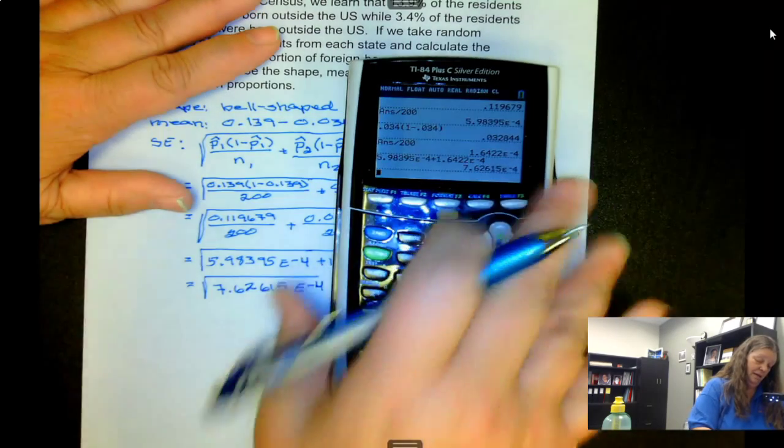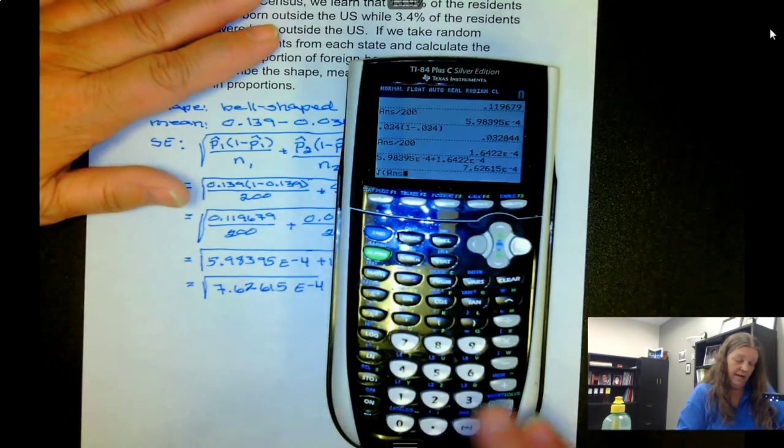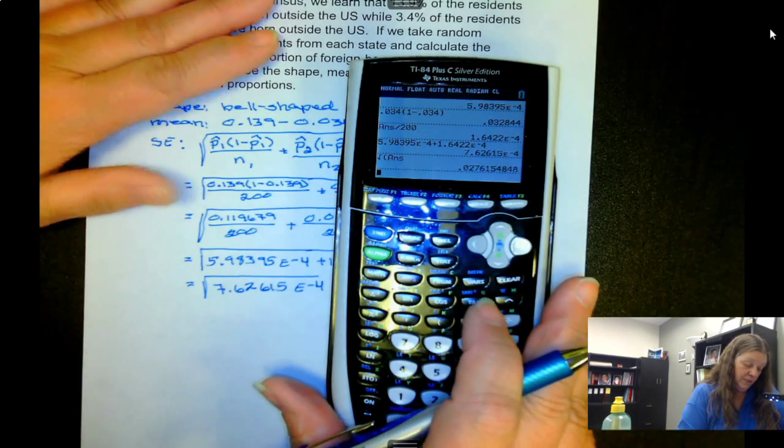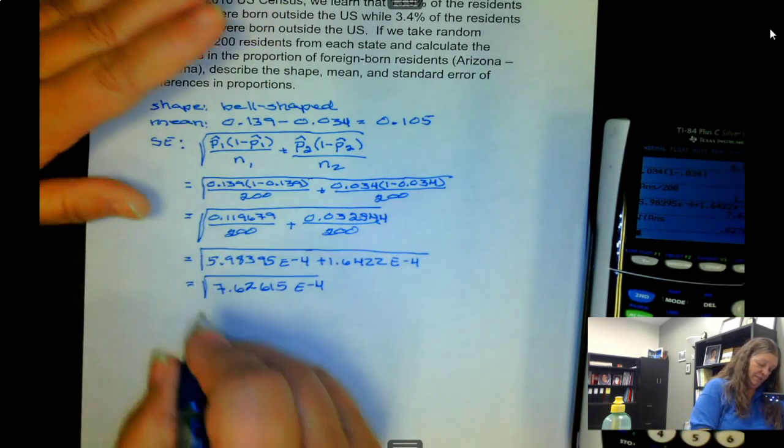And then taking the square root of that number we have 0.0276.